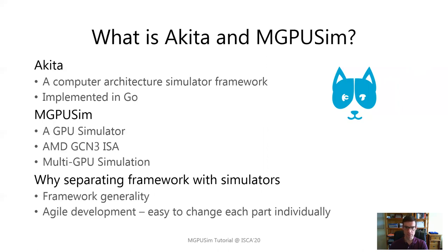Both Akita and NGPU-SIM are open-sourced under the MIT license and developed with the Go programming language. In the discussion part of the tutorial, we will explain why we chose Go. We separated the framework implementation from the simulator infrastructure to obtain framework generality — a kit usable for other event-driven architectural simulators — and to enable agile development where each part can be modified independently.